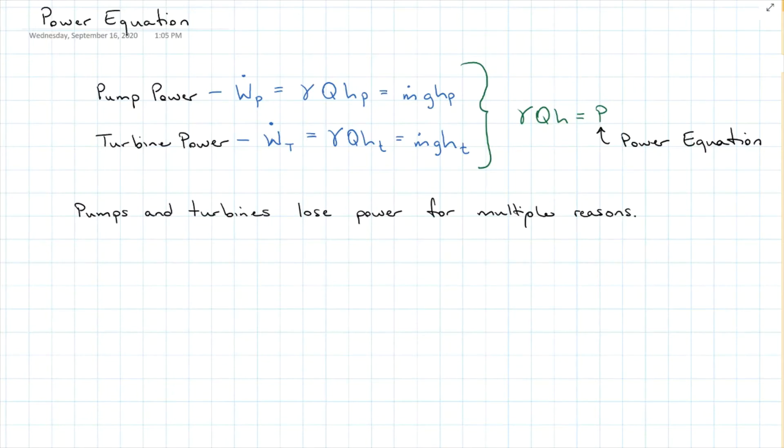Pumps and turbines lose power or energy for multiple reasons: age, friction, loss, cracked propellers. So then we have an efficiency equation. Efficiency is represented by eta, and it is equal to the output power divided by the input power.